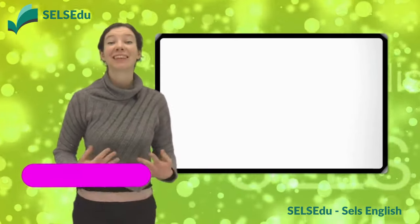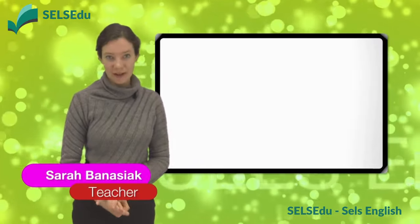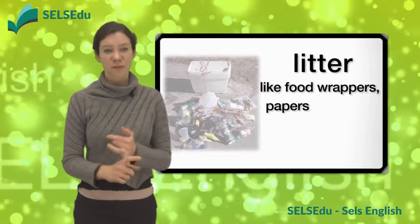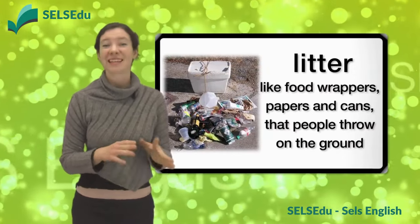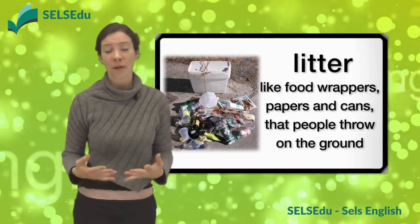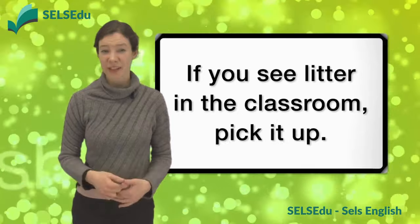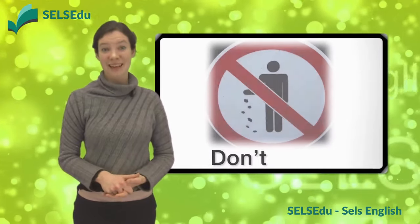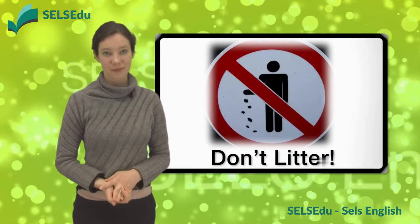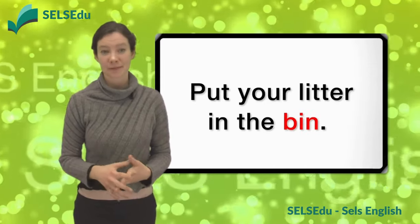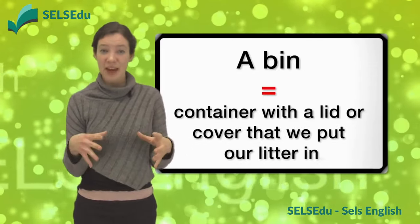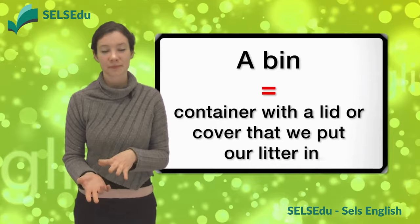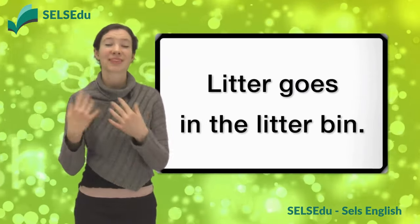Hi, everyone. Let's look at some of the vocabulary from today's dialogue. Litter is dirt, like food wrappers, papers, and cans that people throw on the ground. If you see litter in the classroom, pick it up. You can find signs that say, don't litter. Put your litter in the bin. A bin is a container with a lid or a cover that we put our litter in. Litter goes in the litter bin.